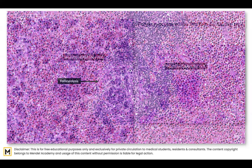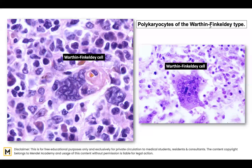The presence of polykaryocytes of the Warthin-Finkeldey type — essentially giant cells with numerous nuclei, sometimes ranging up to 30 to 40 within a single cell — are also seen in Kimura disease, located inside the germinal center.